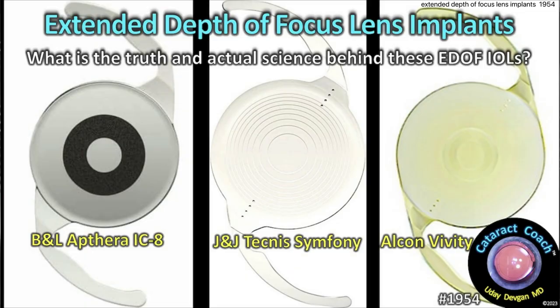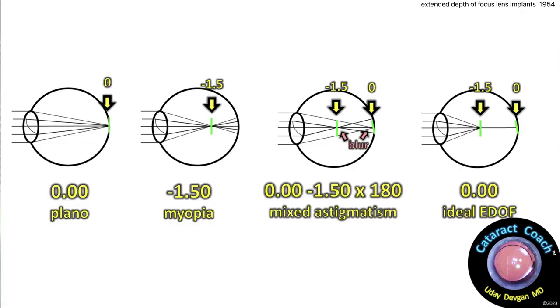Here are three options we have available. We already talked about how pupil size is important. Let's look at an example of the focus range we can expect from an EDOF lens. In this picture, plano is our word for zero — zero prescription, focused at far distance. Minus 1.50 is myopia, focused at somewhere in the intermediate range. Minus 1.50 correlates to about 67 centimeters, or about 26 inches.